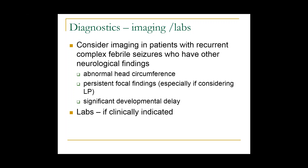For imaging — who gets a CAT scan or MRI? We would consider imaging in patients who have either recurrent complex febrile seizures or other neurological findings, such as an abnormal head circumference or persistent focal findings. We'd be worried that there is a primary structural lesion responsible. If a patient has persistent focal findings, we'd also typically want to image before LP given the focality on neurological examination. Patients with significant developmental delay may also get an MRI.